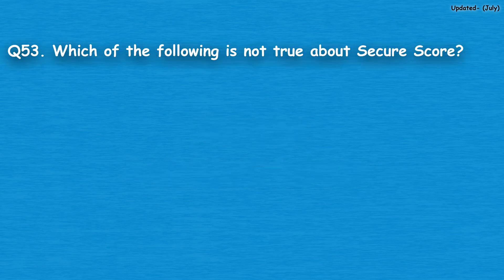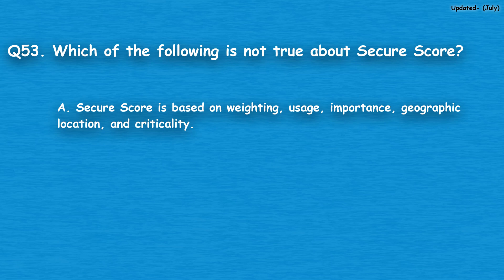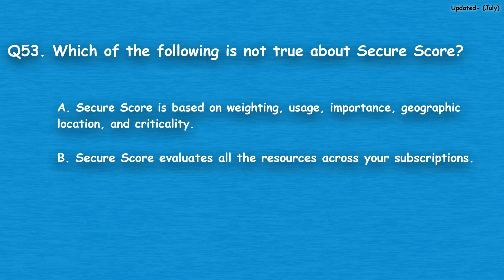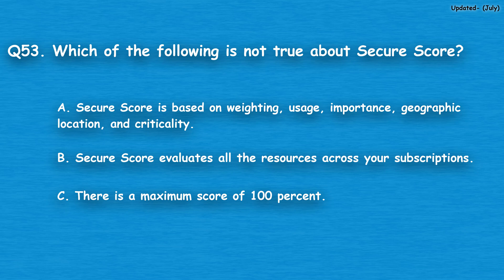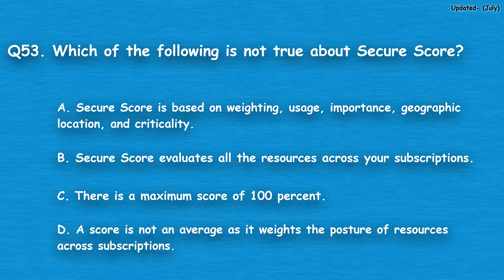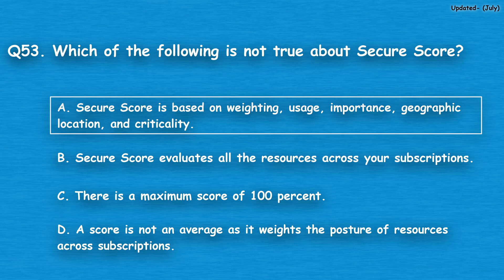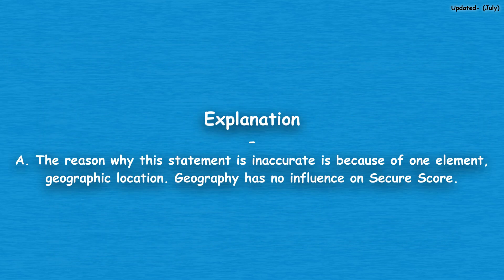Question number 53: Which of the following is not true about SecureScore? Option A: SecureScore is based on weighting, usage, importance, geographic location, and criticality. Option B: SecureScore evaluates all the resources across your subscriptions. Option C: There is a maximum score of 100%. Option D: A score is not an average as it weights the posture of resources across subscriptions. The correct answer is option A. The reason this statement is inaccurate is because of one element — geographic location. Geography has no influence on SecureScore.